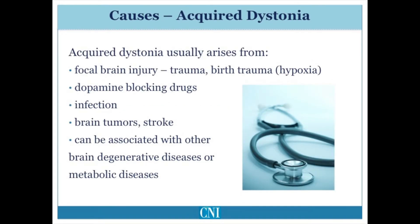A minority of patients have acquired dystonia as a result of non-genetic causes. Dystonia may occur as a result of brain injury from head trauma or as a result of oxygen deprivation during birth. Other non-traumatic causes such as brain tumors, strokes, or brain infection may also cause dystonia.